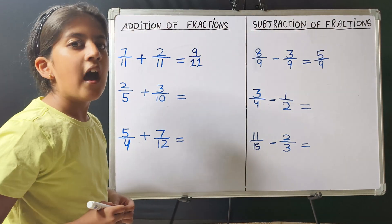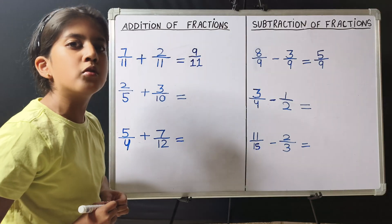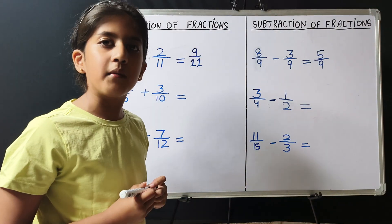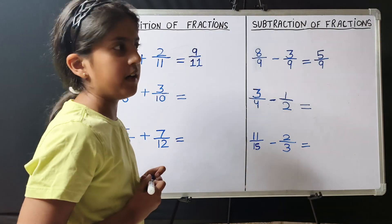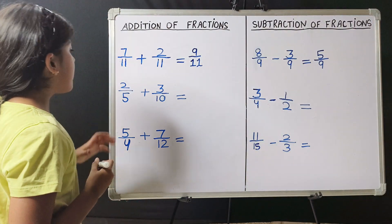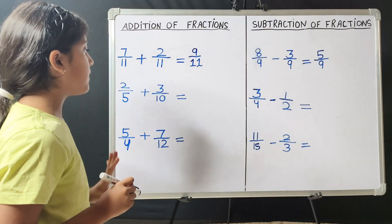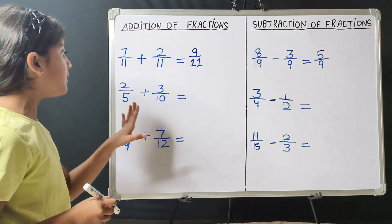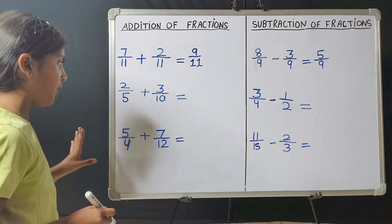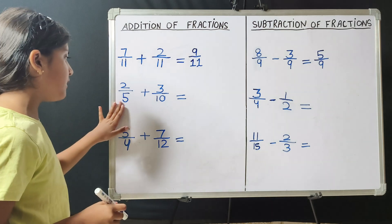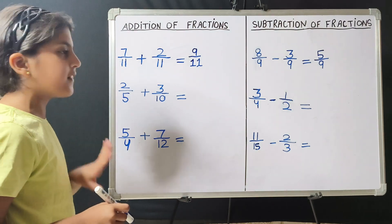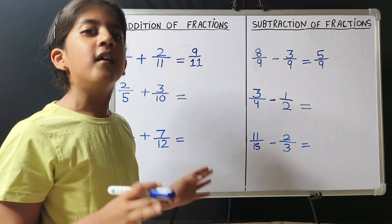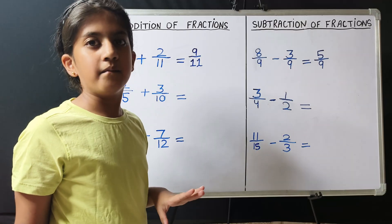Now let's learn how to add or subtract fractions when the denominators are different. Like 2 upon 5 plus 3 upon 10. Here the denominators are not the same — they are different. One denominator is 5 and the other is 10. So how will we make 5 equal to 10?